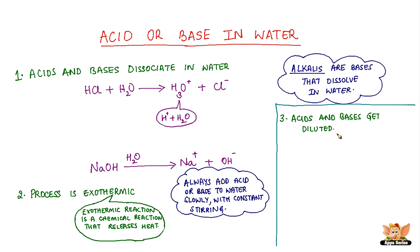Acids and bases get diluted. When an acid or a base is dissolved in water, there is a decrease in the concentration of hydronium or hydroxyl ions per unit volume. This process is called dilution.